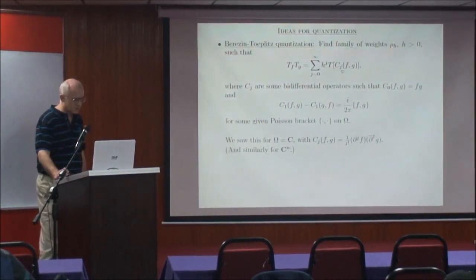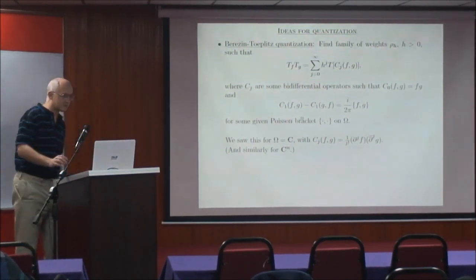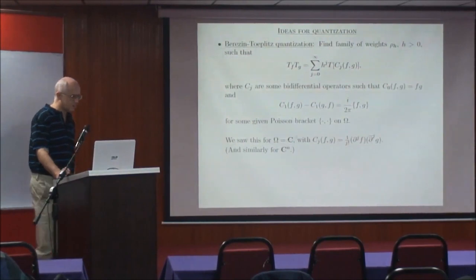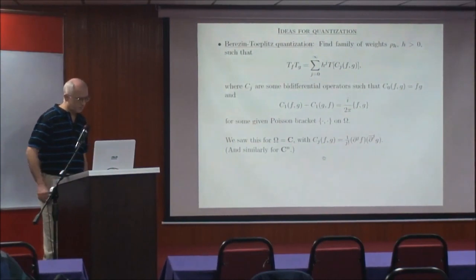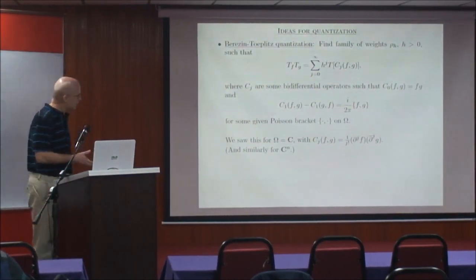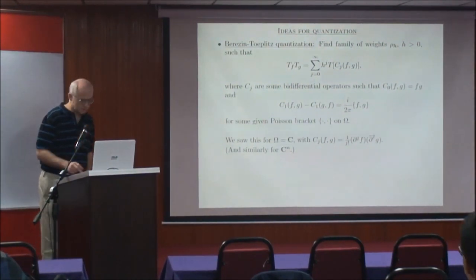The coefficients C_j should be some bi-differential operators. The leading order should be the pointwise product, and the first order term should involve the Poisson bracket, where the plane was the complex plane, or more generally C^{2n}, where we took the other four spaces.